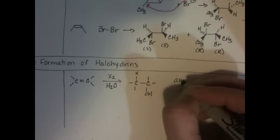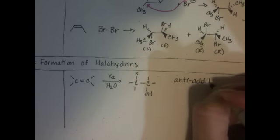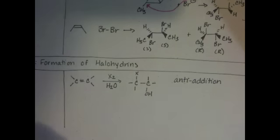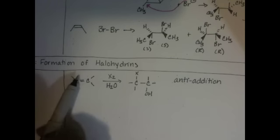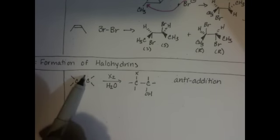So it's an anti-addition. The mechanism is the same or very similar to the mechanism in section 8-8, which is why they end up anti. It starts the same where you attack the X2 with the double bond and produce that triangle-shaped intermediate.